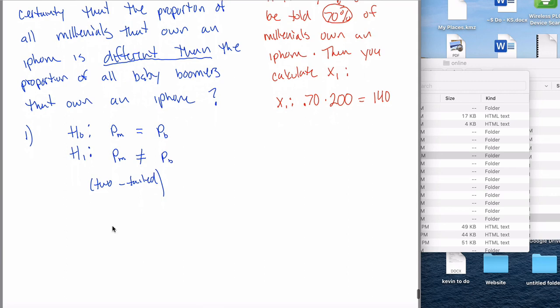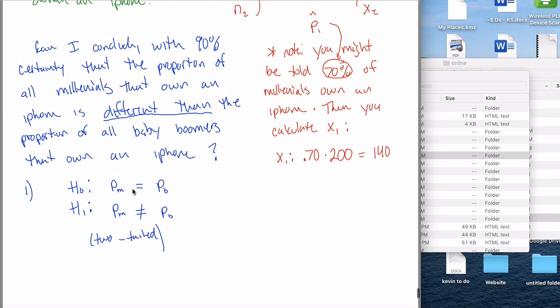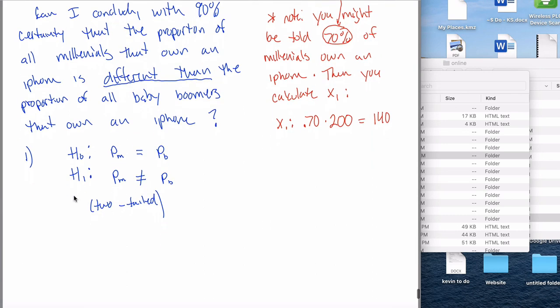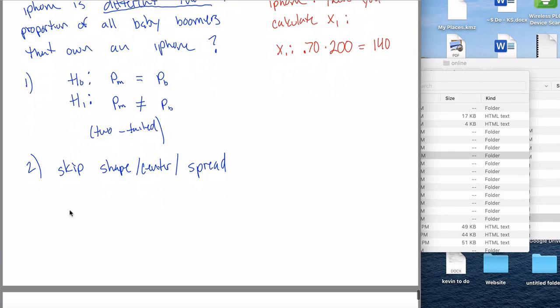For step two, you could state the shape, the center, and the spread of the distribution. However, I don't need you to do all that. The shape's approximately normal for a pretty complicated formulaic reason. The center and the spread are also given by pretty ugly looking formulas. We're going to skip shape, center, and spread again. So that brings us right to step three, where we draw the picture. When you're drawing the picture, you draw something that's approximately normal. We've been putting zero in the middle for all of our hypothesis testing. Conveniently, we're still going to do that.